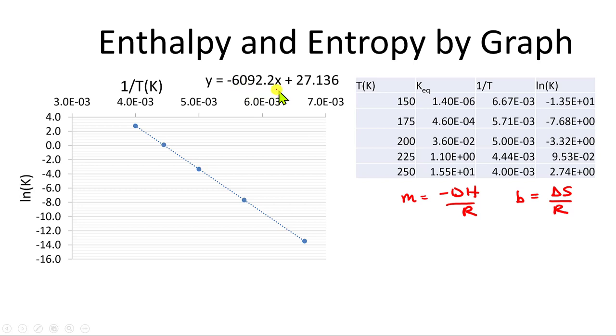I find that the slope is negative 6092.2. So this is negative delta H over R is equal to negative 6092.2. The units for this are in Kelvin, because the slope form is these essentially become unitless for the y value, and then the x value is 1 over temperature in Kelvin. So to get delta H, that's just going to be R times 6092.2 Kelvin.